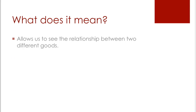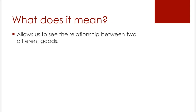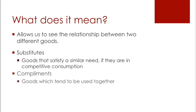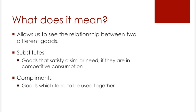So what does this mean? Well, it allows us to see the relationship between two different goods. First of all, these goods could be substitutes — goods that satisfy a similar need if they are in competitive consumption — complements, which are goods that tend to be used together, or goods which are unrelated.